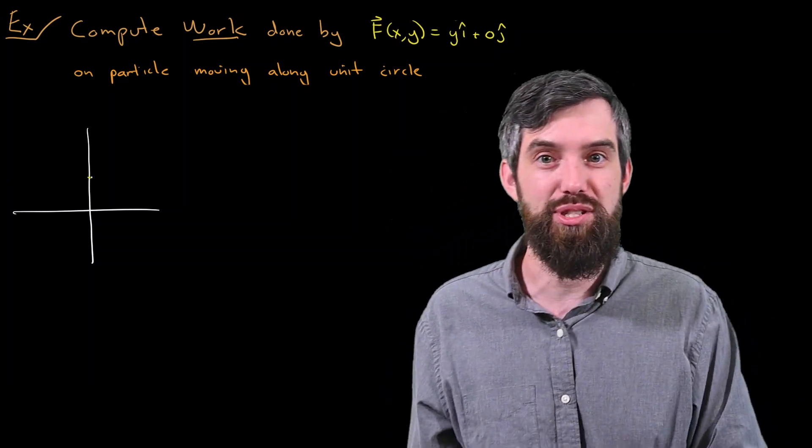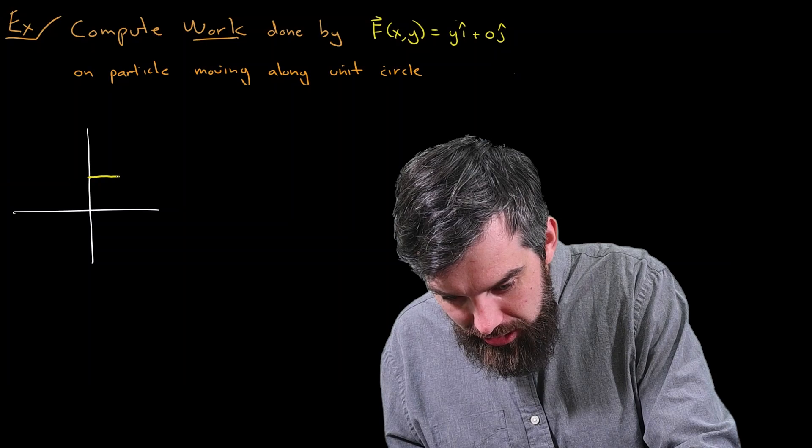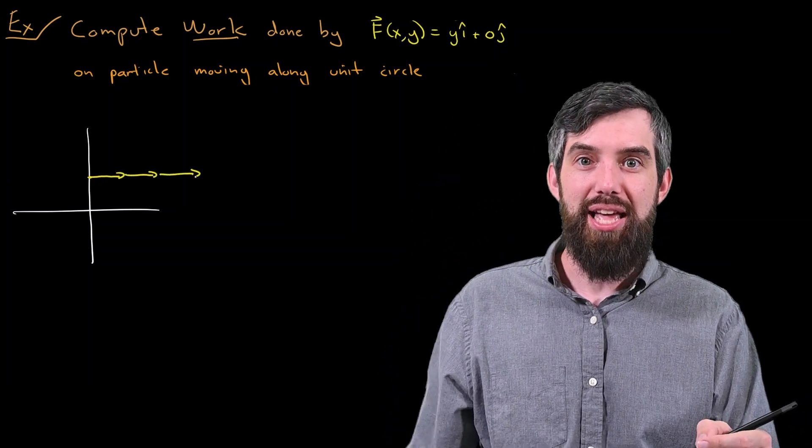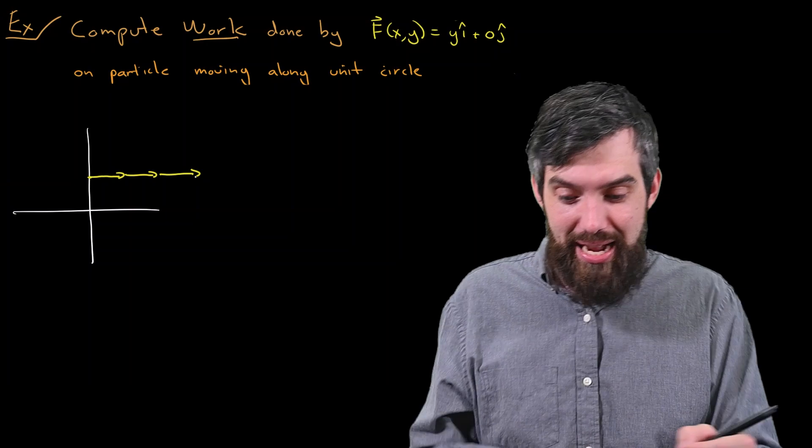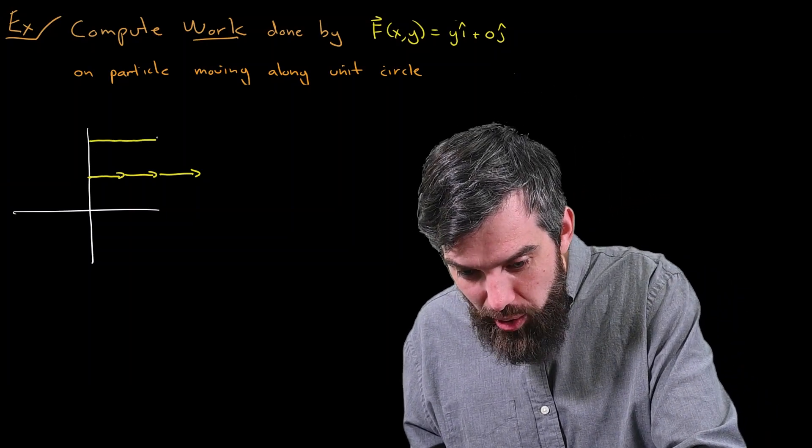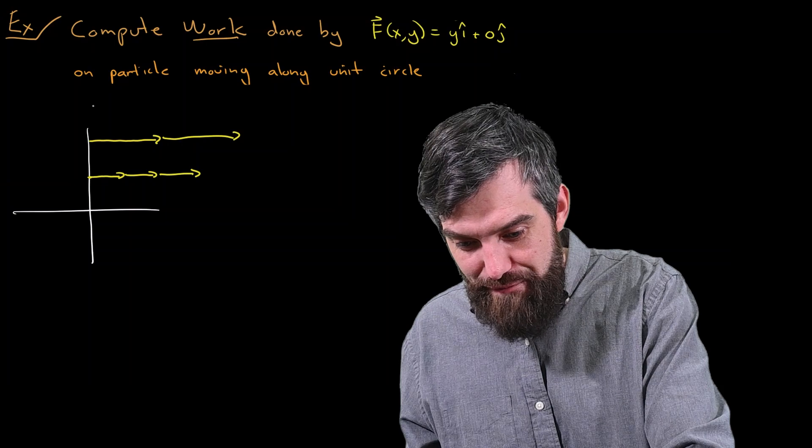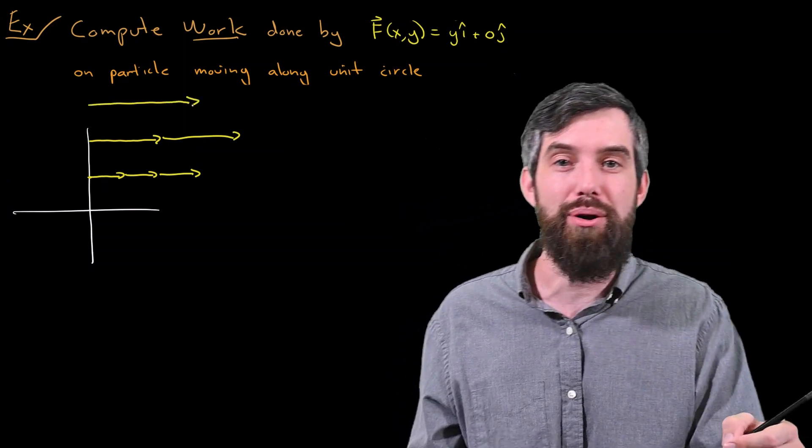Say, this point right here at (0,1), the vector points exactly 1 to the right. If the y value was twice that, say 2, then the vector would also be of length 2, and so forth. So this is a vector field that gets longer as it goes up.